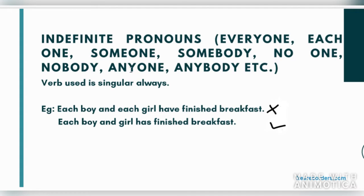So what we have to do next is: if we have indefinite pronouns, how do we tackle them? Whatever the pronouns or nouns, whether they are singular or plural, we don't always understand that. So our rule is: indefinite pronouns like everyone, each one, somebody, someone — they are always singular. For example, 'Each boy and girl has finished breakfast.' Here we put 'has.' 'Have' is incorrect.